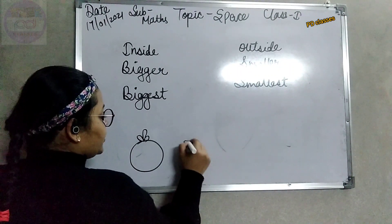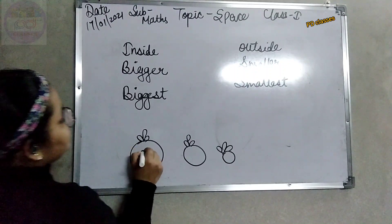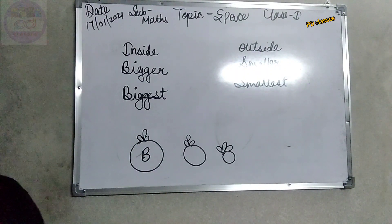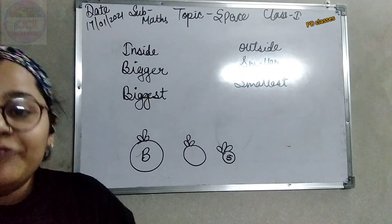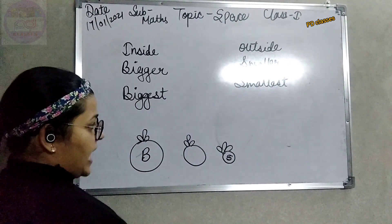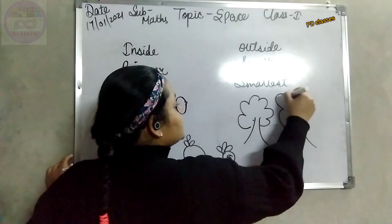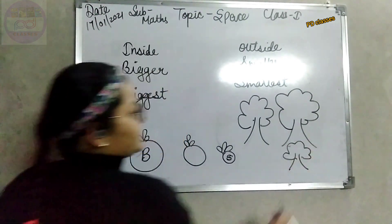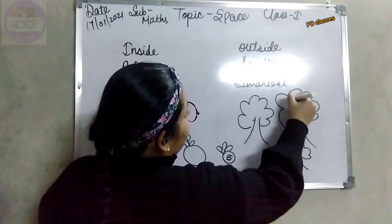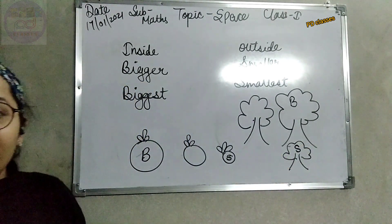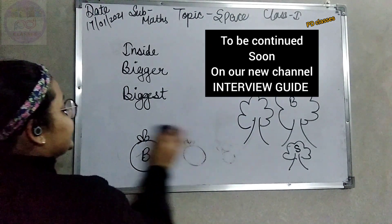These are tomatoes. Which is the biggest one in these three? This is the biggest one. Which is the smallest one? This is the smallest one. Very good students, you are learning very fast and I am very impressed with you. Tell me one more time — which is the biggest one and which is the smallest one? Which is the biggest tree and which is the smallest tree? The second one is the biggest tree and the third one is the smallest tree. Very well done, students.